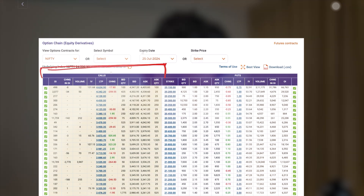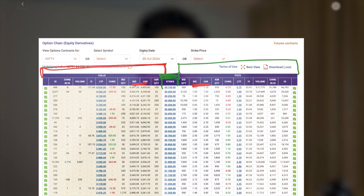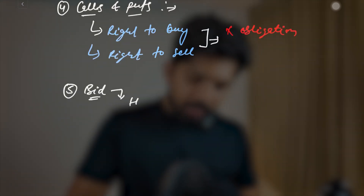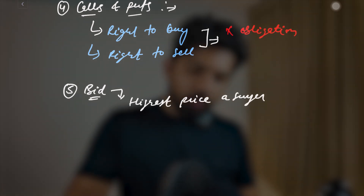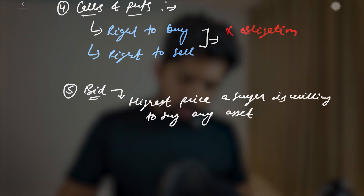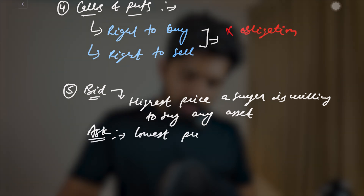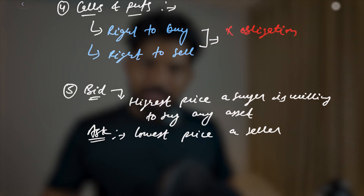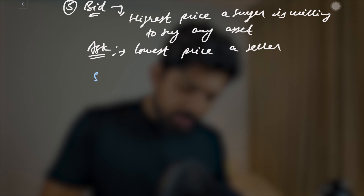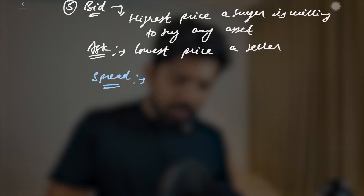On the screen you can see the call information on one side and put options on the other, with the strike price column in the middle. Now, bid and ask: the bid is the highest price a buyer is willing to pay for any asset, and the ask is the lowest price a seller is willing to accept. Another important concept is the spread, which is simply the difference between the ask and the bid — this is where market makers play, which we'll cover in a future session.